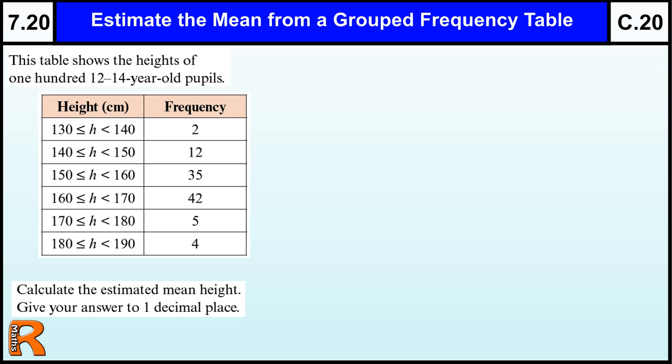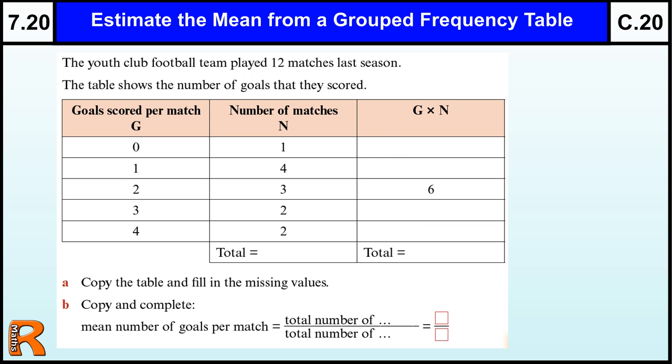Okay, estimating the mean from a grouped frequency table. Level 7, Grade C. Standard question on statistics at this level. But this builds on the Grade D, Level 6 question of estimating from a frequency table.